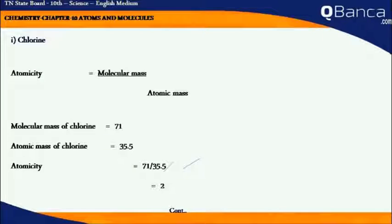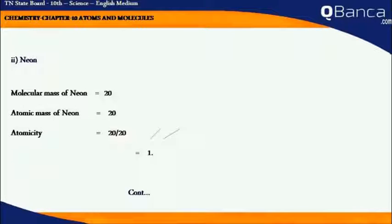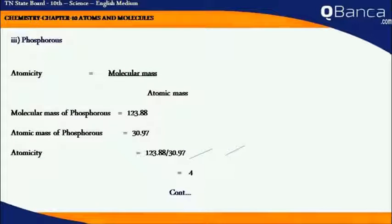Where the Chlorine atomicity is equal to 2, Neon atomicity is equal to 1, Ozone atomicity is equal to 3 and Phosphorus atomicity is equal to 4.